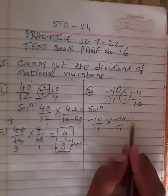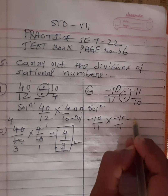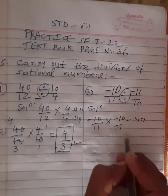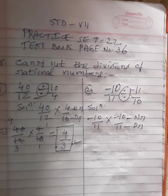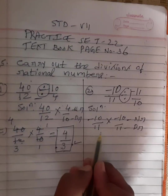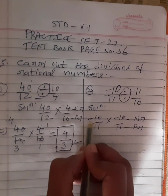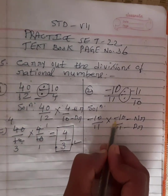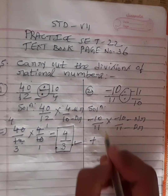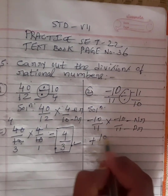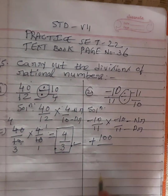You are observing this — minus 10 by 11. We know minus 10 is the numerator and 11 is the denominator. Now we will multiply numerator into numerator. Minus is here, and here also minus is there. Minus into minus is plus. 10 tens are 100. Divided by 11 elevens — we have to multiply.